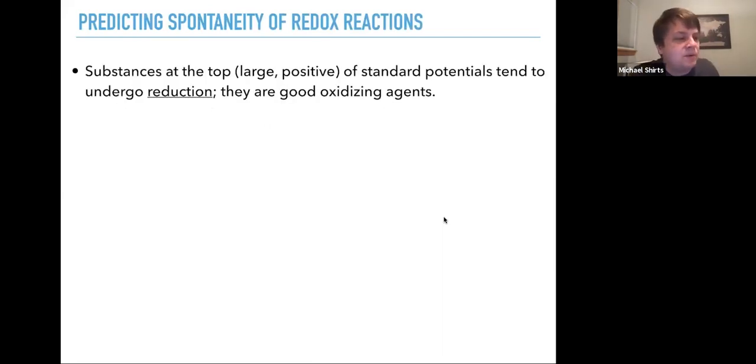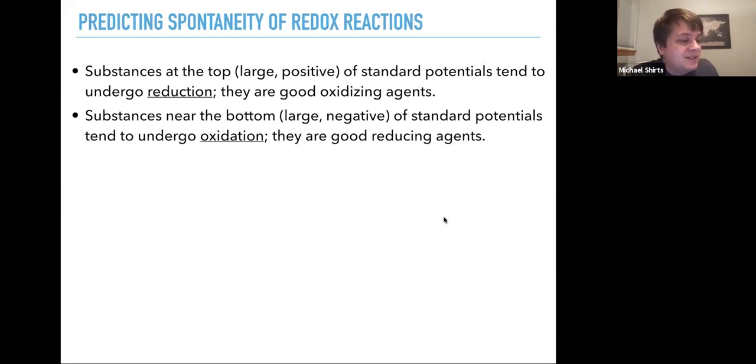Substances at the top with large positive standard potentials tend to undergo reduction. They're good oxidizing agents. Substances near the bottom that have large negative standard potentials tend to undergo oxidation. They're good reducing agents.